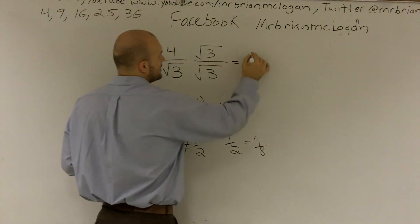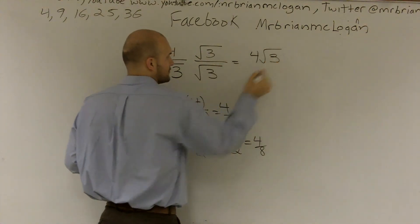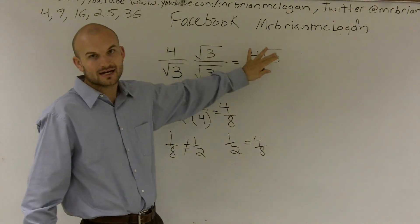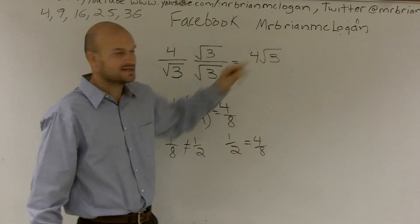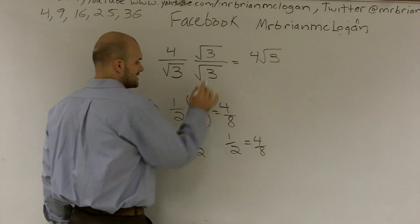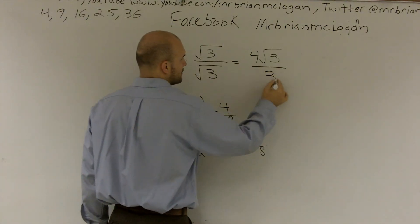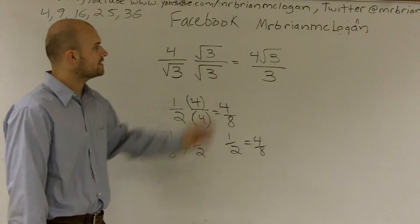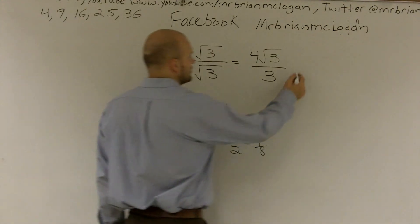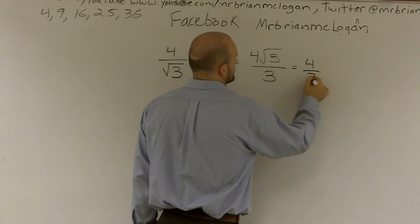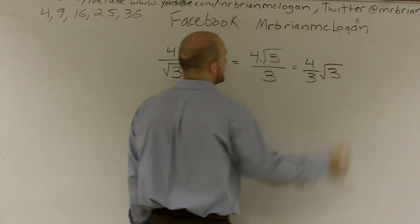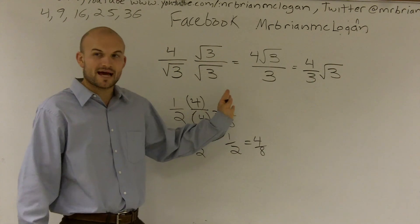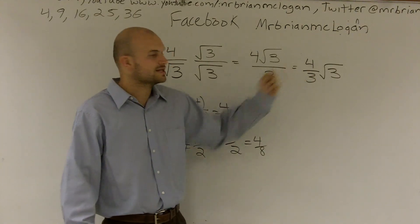4 times square root of 3 equals 4 radical 3 — that's a radical times a whole number, I cannot combine them. And square root of 3 times square root of 3 equals 3. So the simplified answer is 4 radical 3 over 3. If you want, you could also write this as 4 thirds multiplied by radical 3. Math books and texts will show it in different forms, so you should know both ways.